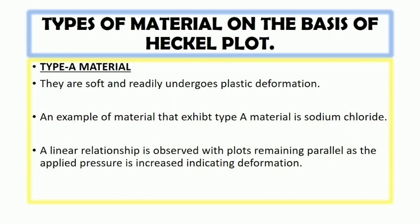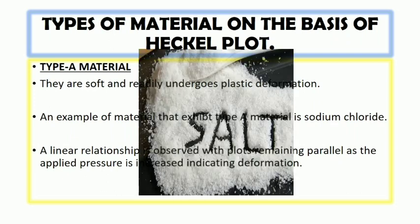Now what are the types of material on the basis of Heckel plot? There are basically three types of material: type A, type B, and type C. Type A is exhibited by the soft materials that readily undergo plastic deformation. Basically, it is exhibited by sodium chloride, common salt.